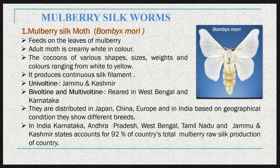The mulberry silkworm may further be classified as Japanese, Chinese, European, or Indian origin based on geographical distribution. In India, Karnataka, Andhra Pradesh, West Bengal, Tamil Nadu, and Jammu and Kashmir account for 92% of the total mulberry raw silk produced in the country.